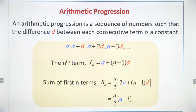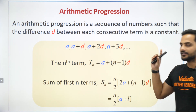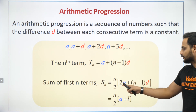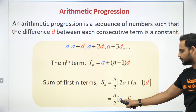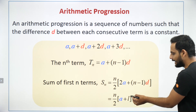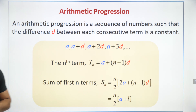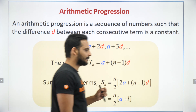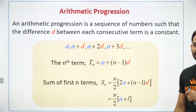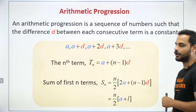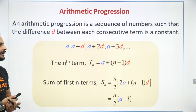Now comes the sum of an AP. The general term formula is a + (n−1)d. The sum of the first n terms formula is Sₙ = n/2 × [2a + (n−1)d], or alternatively Sₙ = n/2 × (a + l), where l is the last term, a is the first term, and d is the common difference.